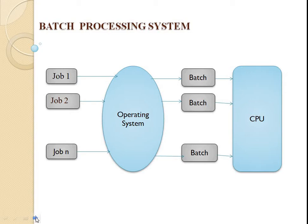The first one is batch processing. The users of a batch operating system do not interact with the computer directly. Each user prepares his job on an offline device like a punch card and submits it to the computer operator. To speed up processing, jobs with similar needs are batched together and run as a group.